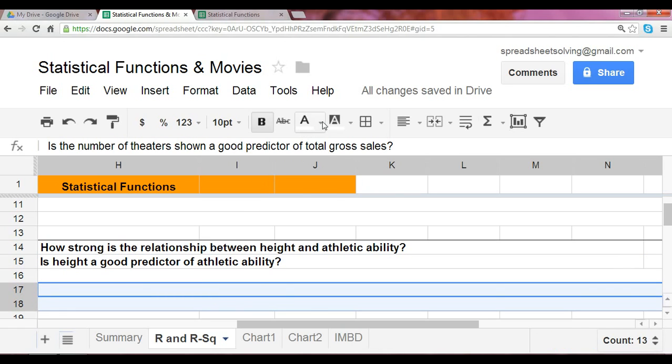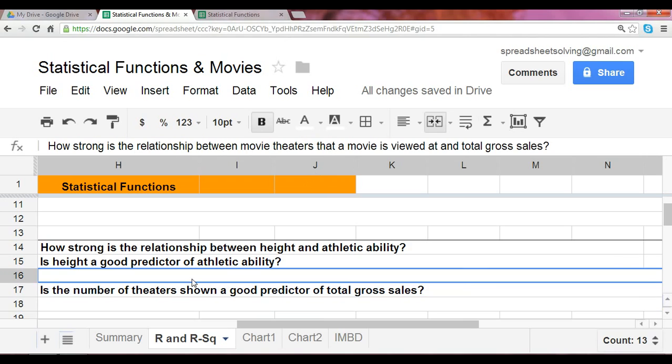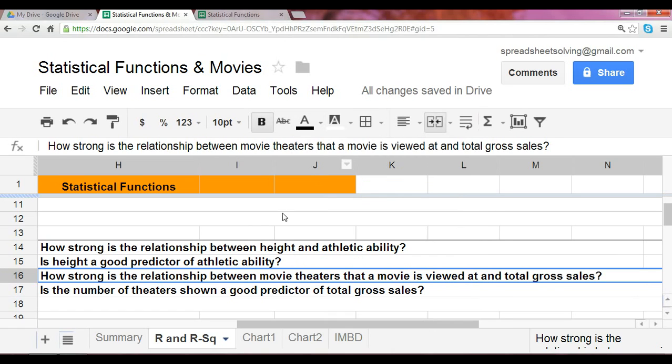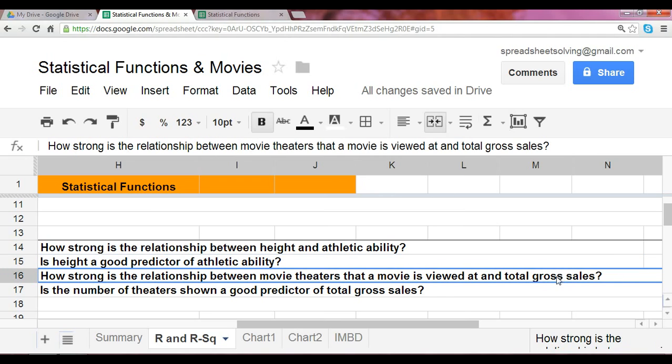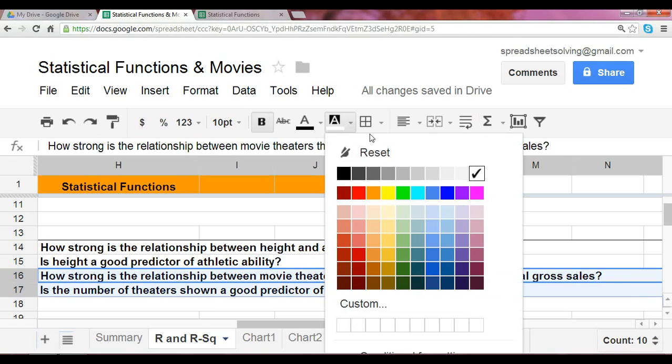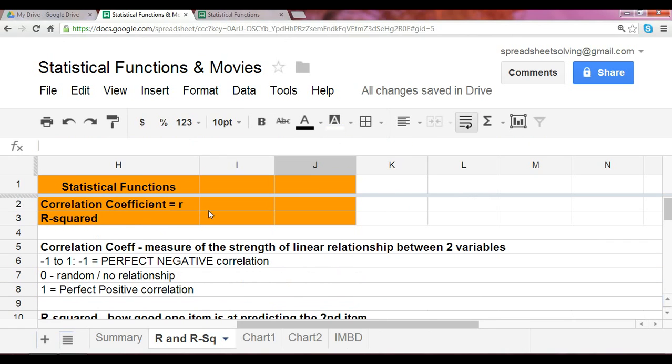What are some other questions we can ask? Is the number of theaters shown a good predictor of total gross sales? How strong is the relationship between movie theaters that a movie is played at and total gross sales? Let's take a look. We're going to examine these two questions right now, and learn how to use the correlation coefficient and r-squared functions.